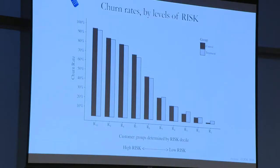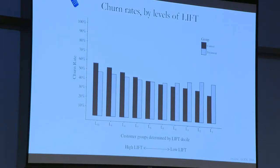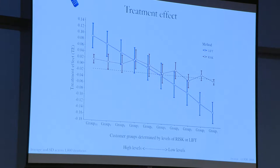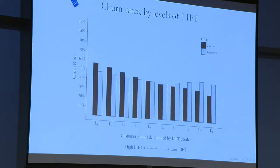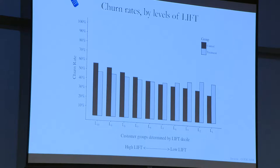If I now sort people by the different criteria — grouping by expected treatment effect — the ones here are those whose expected treatment effect is the highest. And now we can see that the reduction in churn is way, way higher. I'm not reducing churn by 2%; I'm reducing churn by, I think, about 8%.